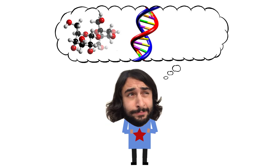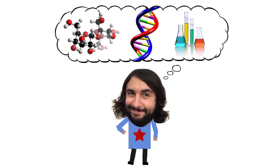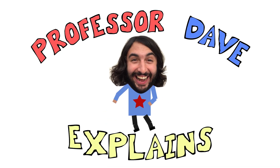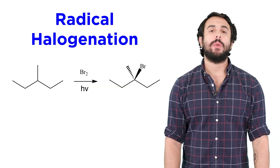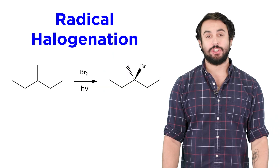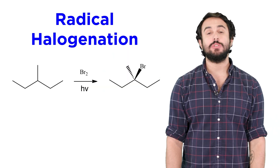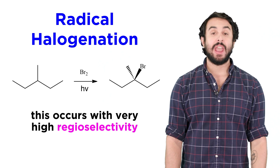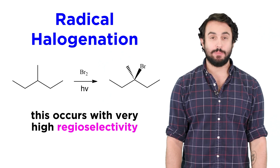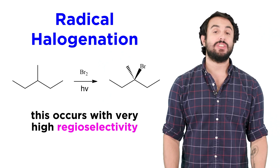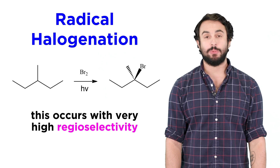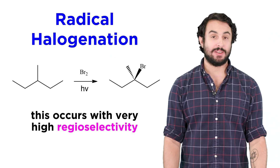Professor Dave Explains. We already know how to do radical halogenation, which is useful for halogenating alkanes, and we also know that when specifically brominating, it is very easy to predict where on the alkane the bromine atom will end up.